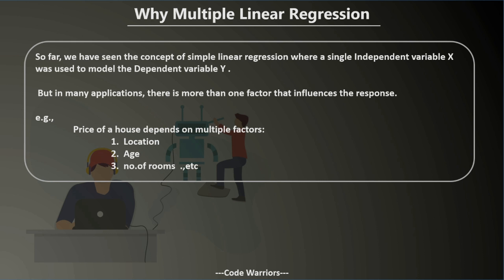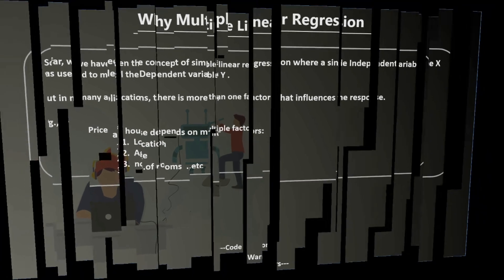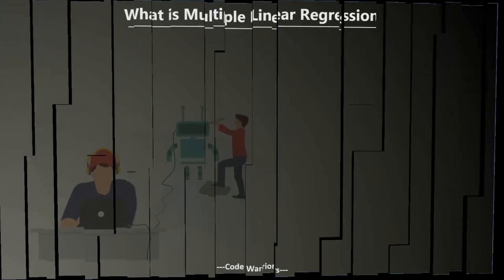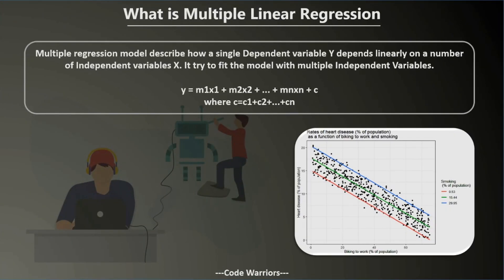In the previous session you saw what linear regression is — there are two types: simple and multiple. We learned about simple linear regression in the previous video, and now we are going to learn about multiple linear regression. Multiple linear regression is a model that tries to fit a single dependent variable with multiple independent variables.